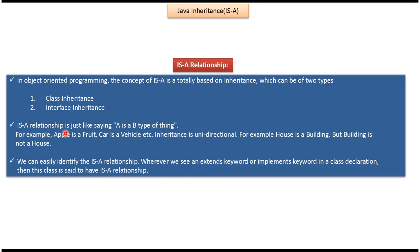The is-a relationship is just like saying A is a B type of thing. For example, apple is a fruit, car is a vehicle etc. And inheritance is unidirectional. For example, house is a building but building is not a house. We can easily identify the is-a relationship whenever we see an extends keyword or implements keyword in a class declaration. Then the class is said to have an is-a relationship.